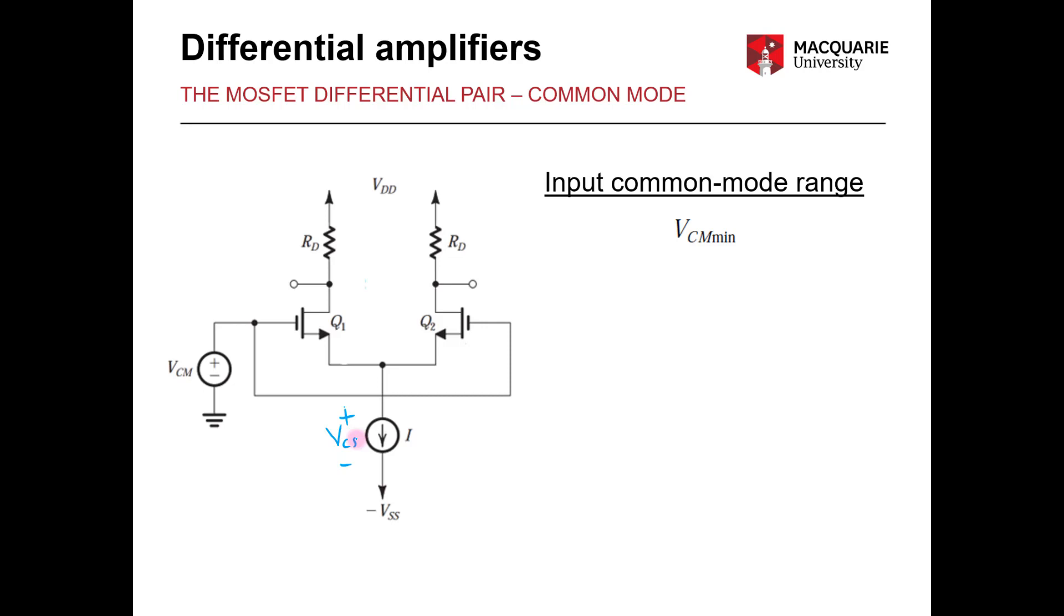So let's come up with an expression for VCS within our MOSFET differential pair here. We know that on the top end here we have our source voltage and at the bottom we have our negative supply. So we can say straight away that VCS is going to equal VS minus that negative supply, so equal to VS plus VSS.